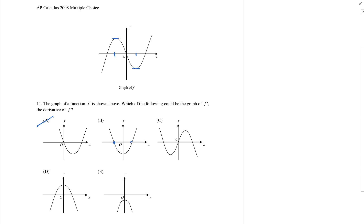0 here — 0 could be that one, can't be that one, could be this one, could be this one, can't be that one. Where's the derivative, which is the slope? The slope is very positive, very positive, and then it gets cut down to 0.